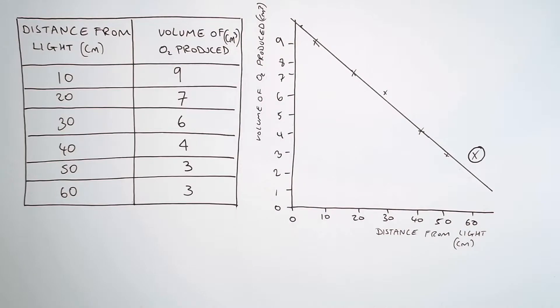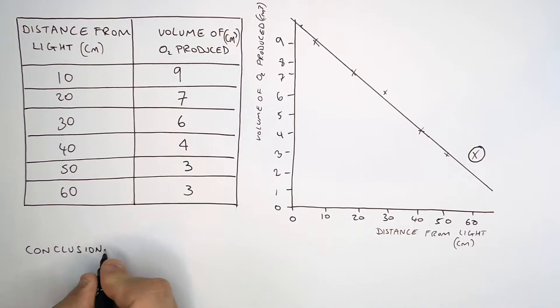So what conclusions can we draw by looking at the trend in this graph? If we say that the closer the plant is to the light source, the higher the light intensity, we can draw the following conclusions.